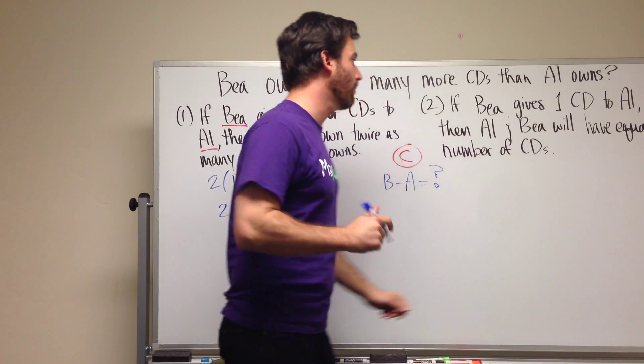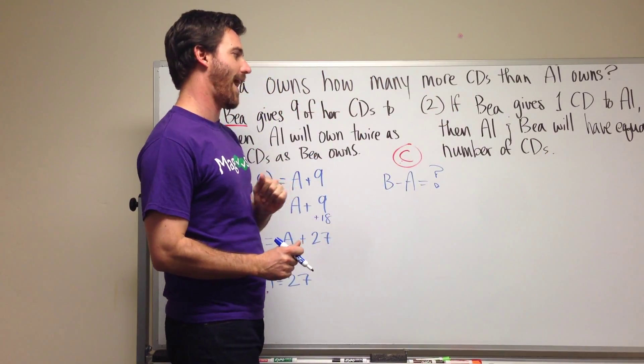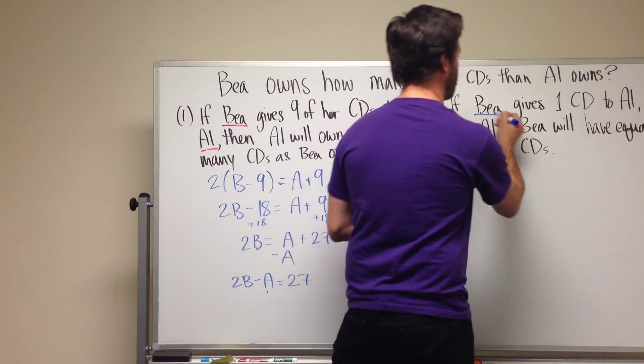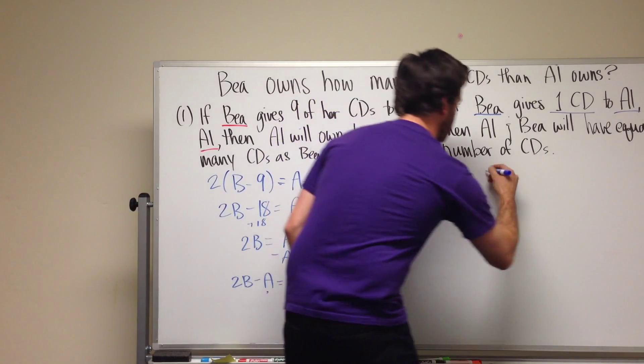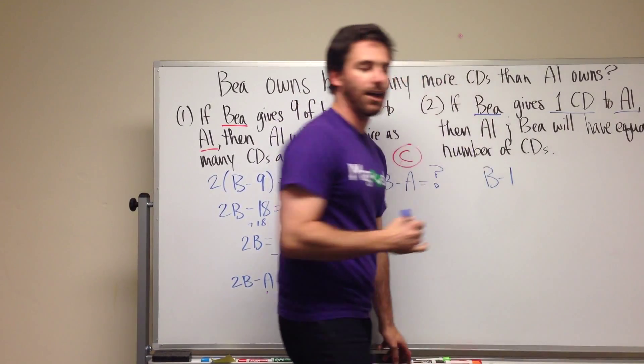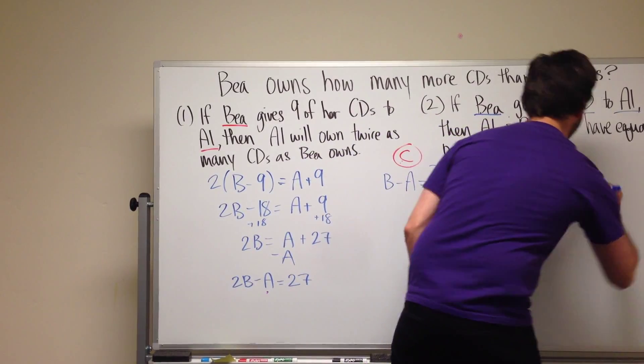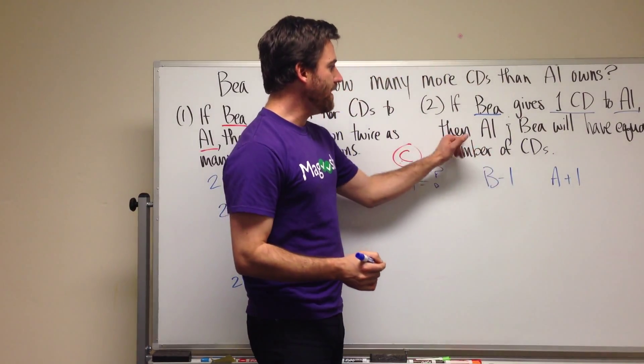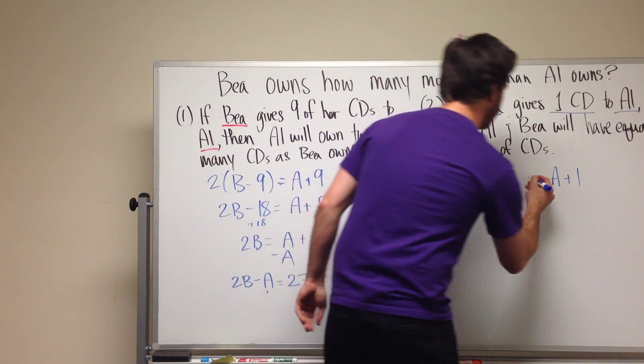So this says if B gives one CD to Al. Okay, let's just do that first part. B gives one CD to Al. So that means B just lost a CD and Al is gaining a CD. And then Al and B will have equal number of CDs. And they'll be equal.